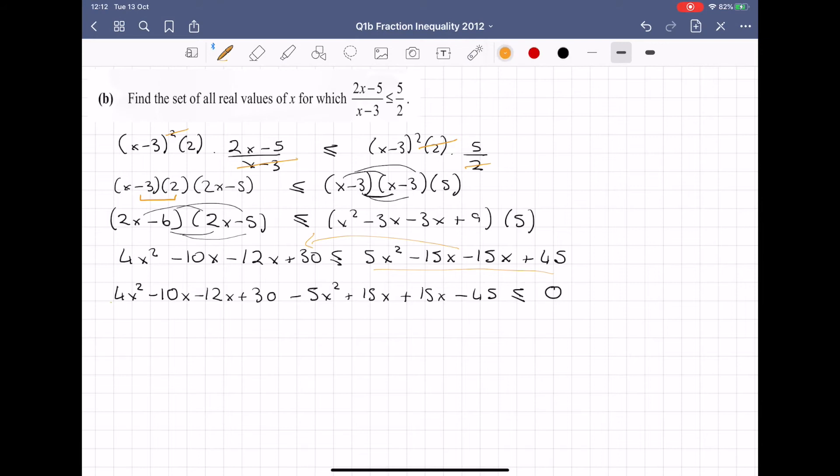So let's start tidying. There's my x squareds, so that leaves me with -x². So on my calculator, -10 - 12 + 15 + 15, and I'm getting +8x, and then I have 30 - 45, so -15 is less than or equal to 0.